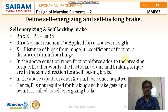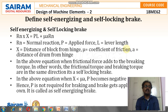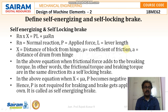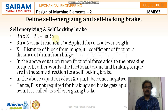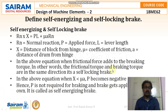Moving to self-energizing and self-locking brakes. The governing relation is: Rn × X = P·L + μ·a·Rn, where Rn is the normal reaction, P is the applied force, L is the lever length, X is the distance of the block from the hinge, μ is the coefficient of friction, and a is the distance of the drum from the hinge. When the frictional force adds to the braking torque — that is, frictional force and braking torque are in the same direction — it is a self-energizing brake. If X < μ·a, then P becomes negative, meaning P is not required for braking and the brake gets applied on its own; this is called a self-locking brake.